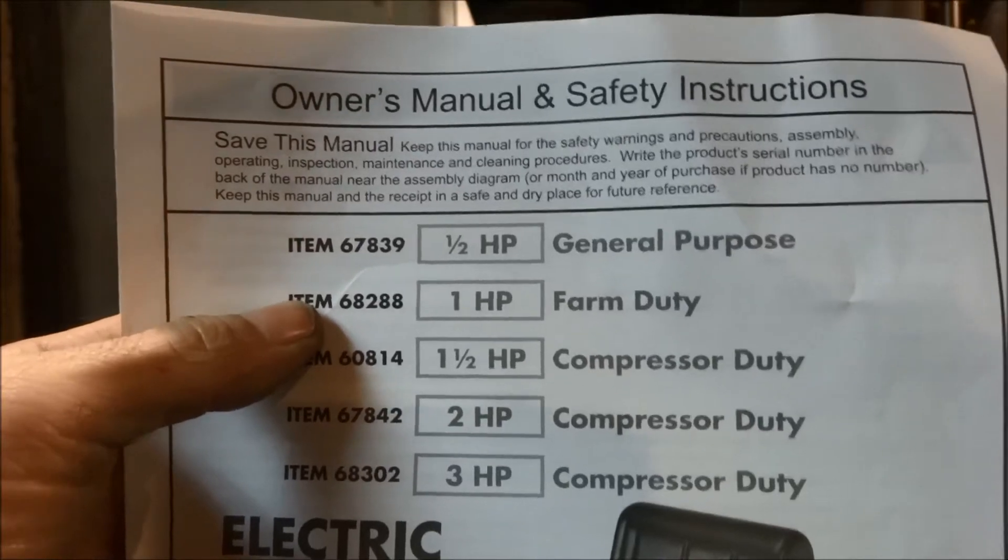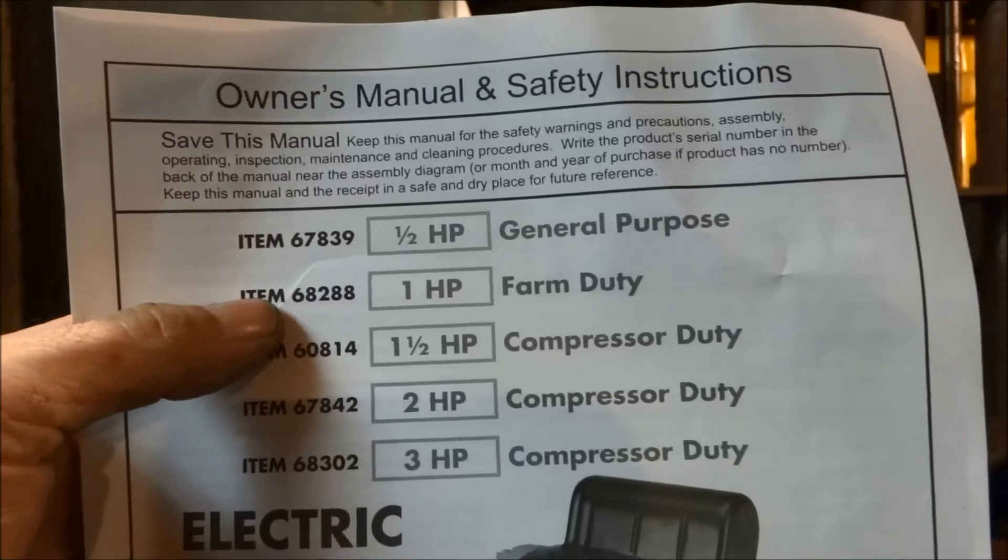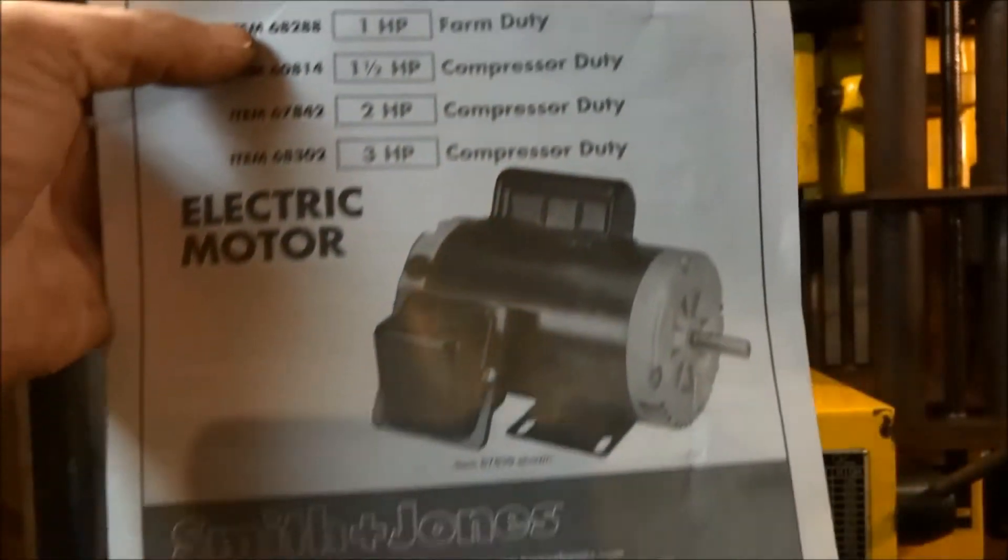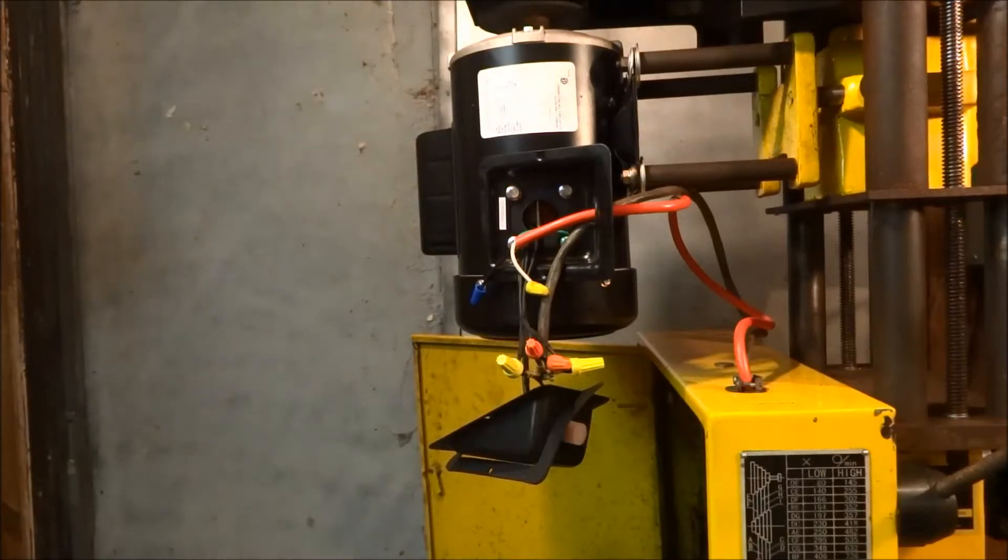All right, this is how to wire a one horsepower farm duty electric motor from Harbor Freight so it can run both forward and reverse.